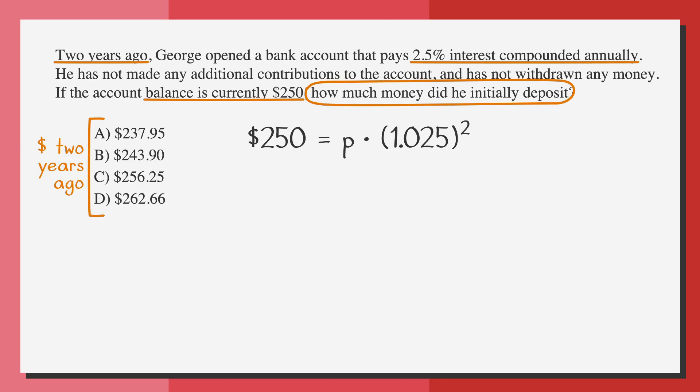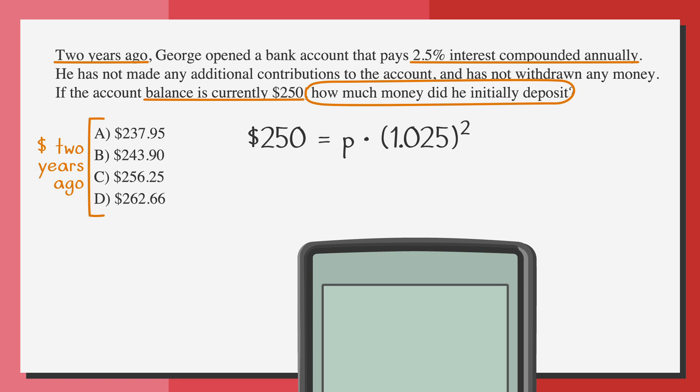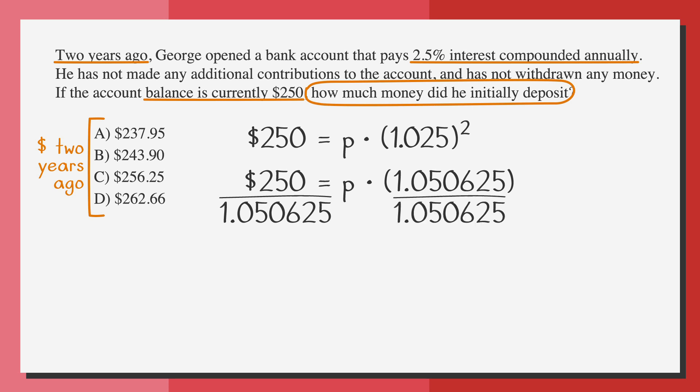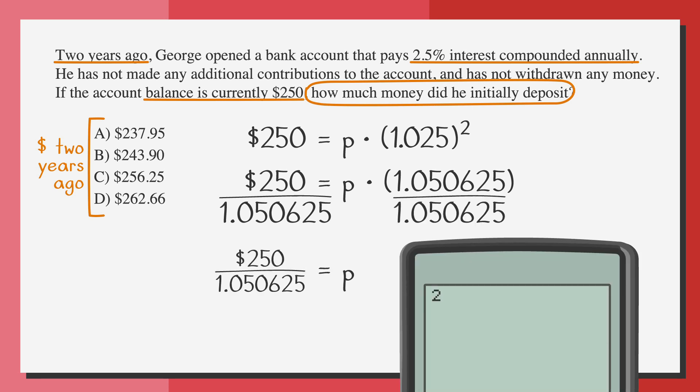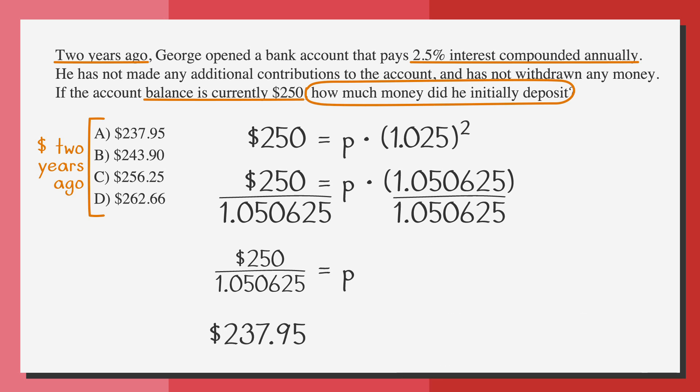Now it just comes down to a little bit of algebra, or if you don't feel comfortable doing the algebra, you can back solve. Let's practice the algebra this time, but we'll use our calculator to help. 1.025 squared is 1.050625. We'll divide both sides by that to solve for p. And we get 250 over 1.050625 equals p, which equals $237.95, or answer choice A.